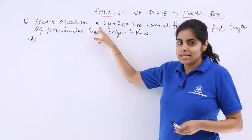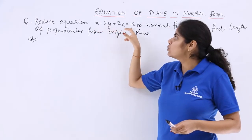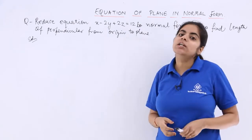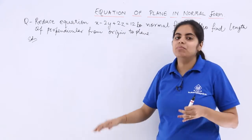The given equation is x minus 2y plus 2z equals 12, and we have to reduce this to normal form. In order to do so, we will be dividing by the square root of the sum of the squares of the coefficients of x, y, z.